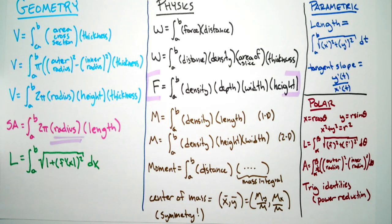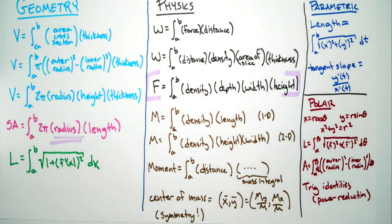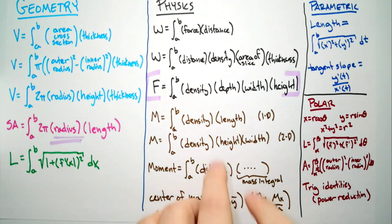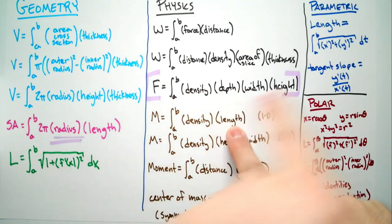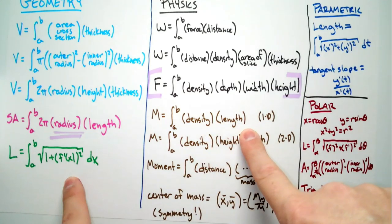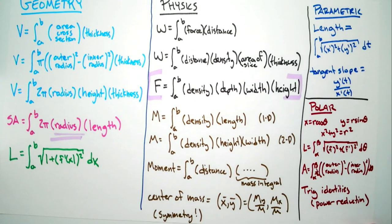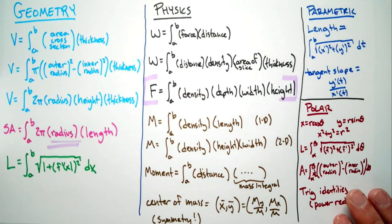For mass, there are really just two variations: one-dimensional and two-dimensional. For one-dimensional, it's density times length. That applies to a rod or even a curve — you just pick the right length formula, whether it's √(x′² + y′²) dt or another form, and multiply by density. For 2D, mass is density times height times width.